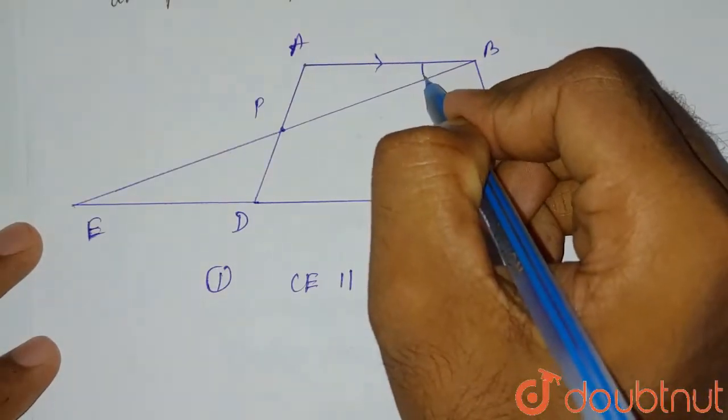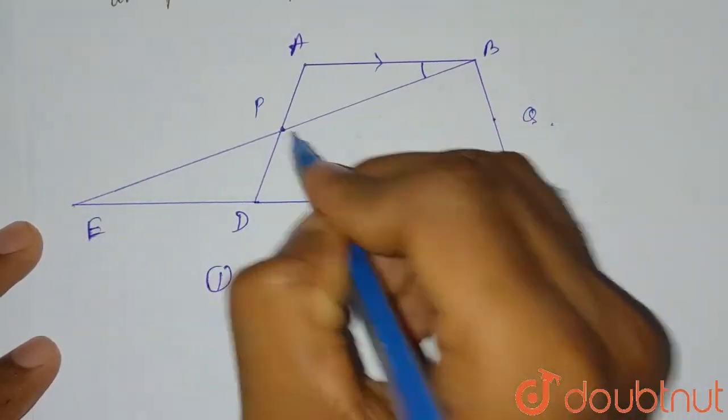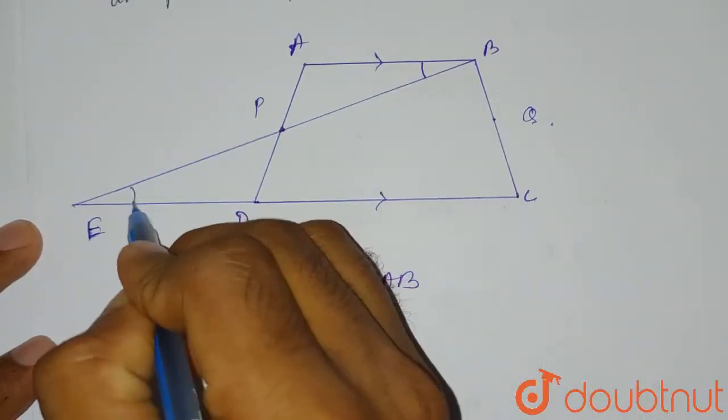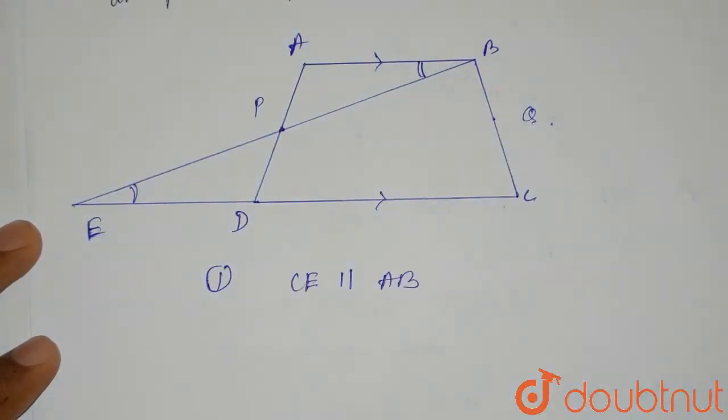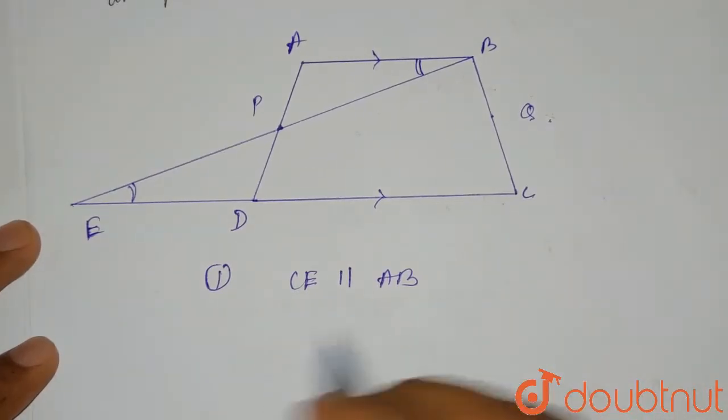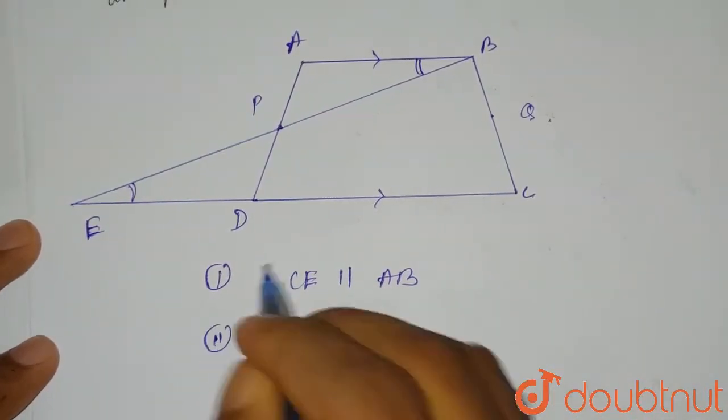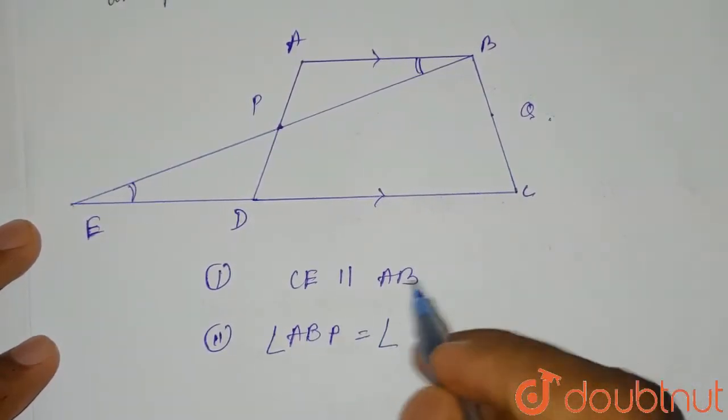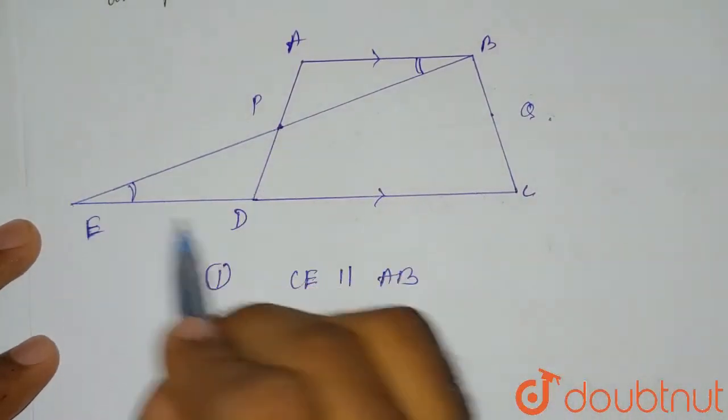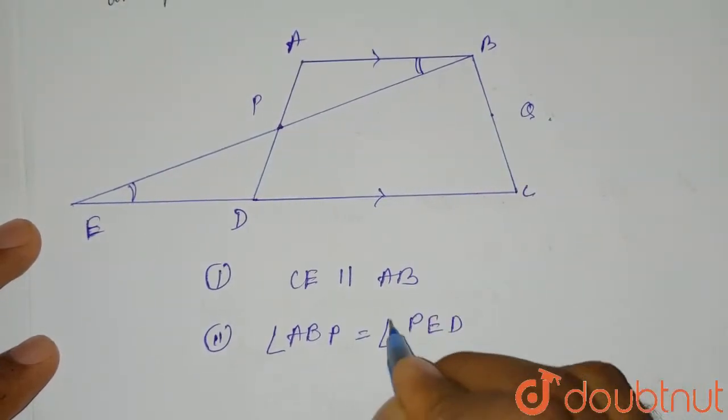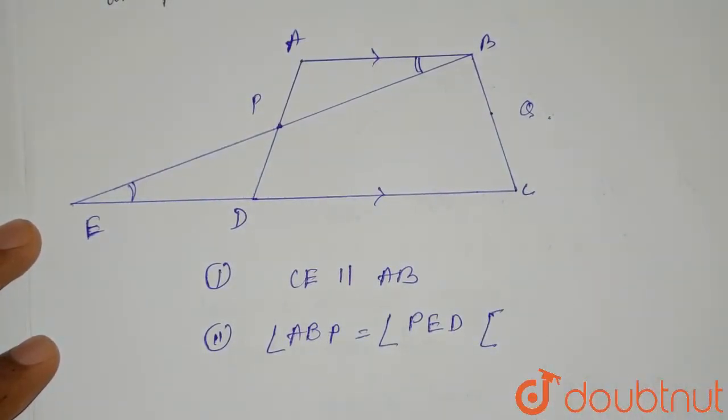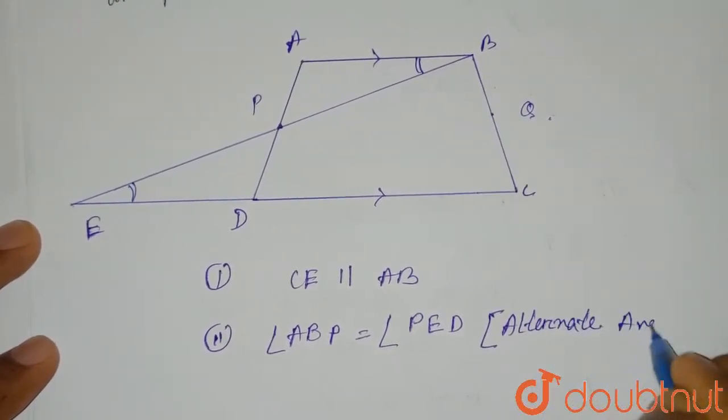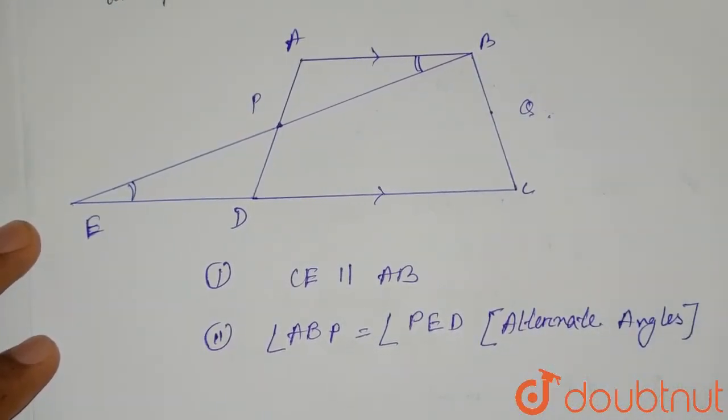As this is parallel, if we take angle PBA and angle PED, these two angles will be equal. Why they are equal? Because they are alternate angles of parallel lines. So from here, the second thing we will get is angle ABP will be equal to angle PED. Why? Because they are alternate angles.